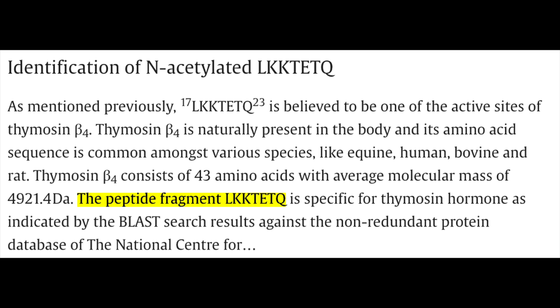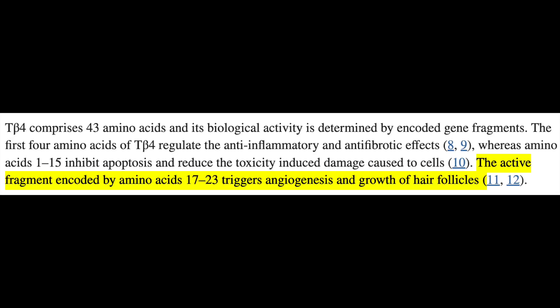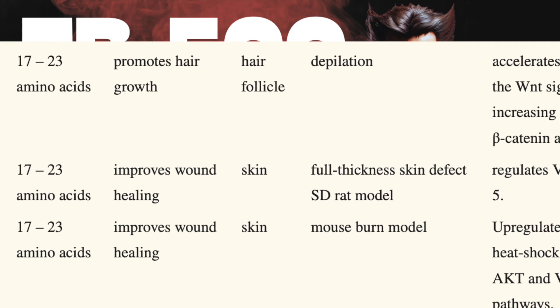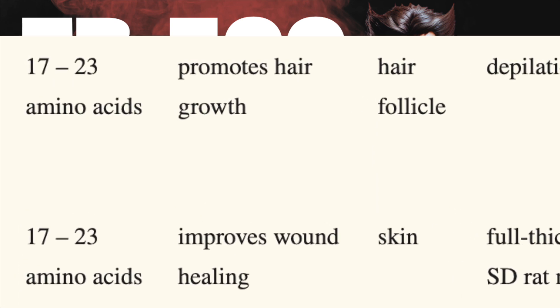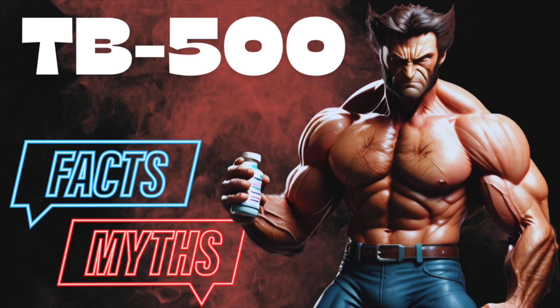Specifically, TB500 is amino acids 17 to 23 of TB4. Interestingly, different fragments of TB4 have been investigated, given the idea that different pieces of its structure correlate to different outcomes. For instance, while amino acids 1 to 15 are thought to inhibit apoptotic activity — or prevent programmed cell death — fragment 17 to 23, i.e. TB500, is thought to strongly favor angiogenesis and growth of hair follicles. So it's more adequately named as TB4 fragment, or thymosin beta-4 fragment 17 to 23, something of that nature. Things to keep in mind when conducting your own investigation.